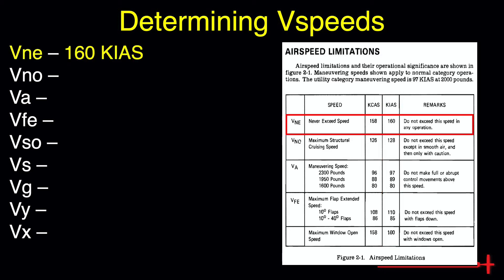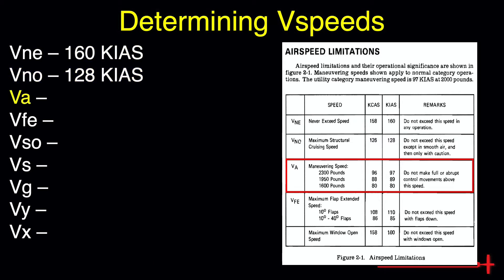We see that the never exceed speed is 160 knots indicated, and our maximum structural cruising speed is 128 knots. The maneuvering speed is dependent upon aircraft weight. We can explain this simply by thinking that a heavier aircraft would have to enter the maneuver at a higher airspeed to maneuver as abruptly as a much lighter aircraft with the same control input. Therefore, the maneuvering speed limitation is less strict at a higher weight. Assuming we are flying near maximum weight, our maneuvering speed is 97 knots. Above this speed, full deflection of control surfaces may overstress the aircraft.